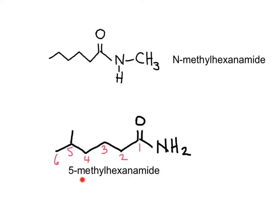Just by looking at the name, you can tell if a substance is a primary, secondary, or tertiary amide. One example has a methyl substituent on the nitrogen — it is a secondary amide. The second one has a substituent on the hydrocarbon chain, and the nitrogen has two hydrogens, so it is a primary amide. The difference in the name is that the one including a position number is primary, and the one including N is secondary.